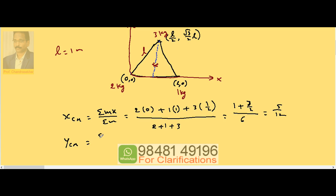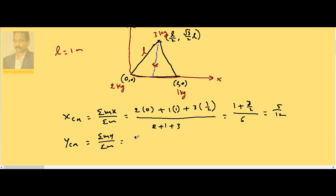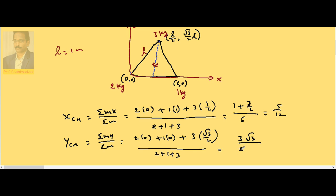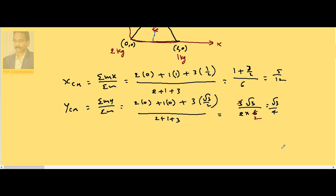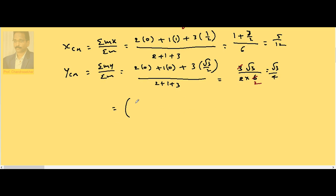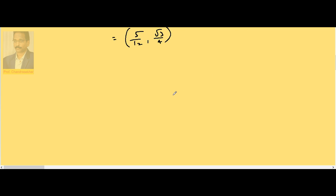The y-coordinate of the center of mass is y_cm = Σmy / Σm. This gives: (2×0 + 1×0 + 3×(√3/2)) / 6 = (3√3/2) / 6 = √3/4. So y_cm = √3/4 meter.